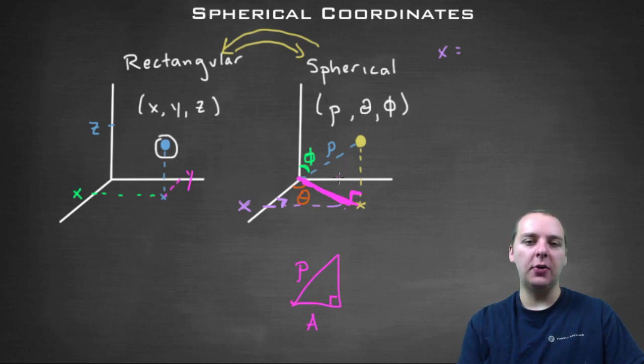But the phi doesn't look like it's in my triangle, but it actually is. Can you see where phi would be in my triangle? Hopefully you can. Alternate interior angles match. And so that phi is the same phi that's right here.